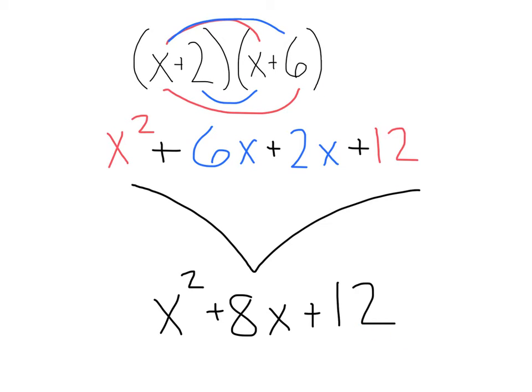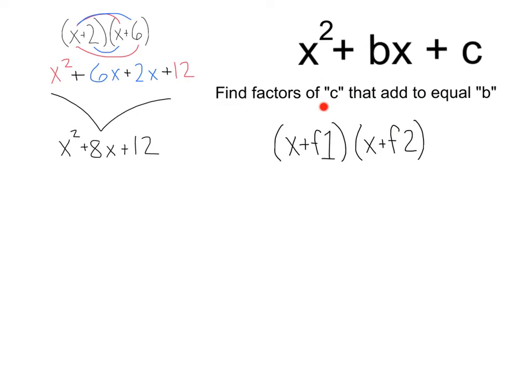And that's what we're looking for when we factor. We want to find factors of c, what two numbers multiply to equal c, that add to equal b. And then our answer is going to be x plus factor 1 times x plus factor 2.